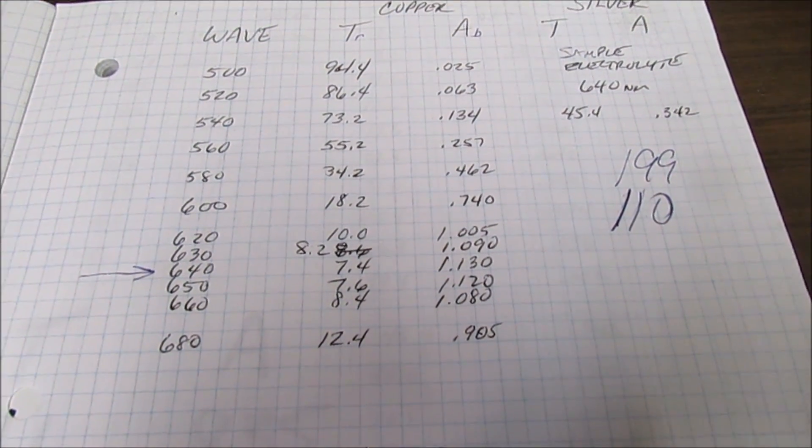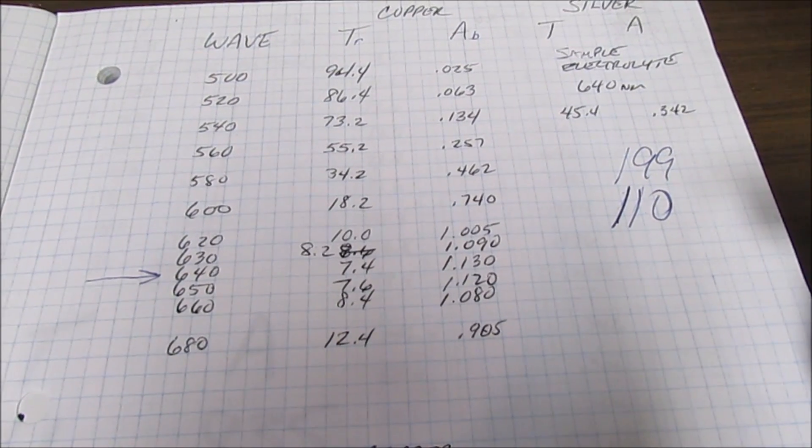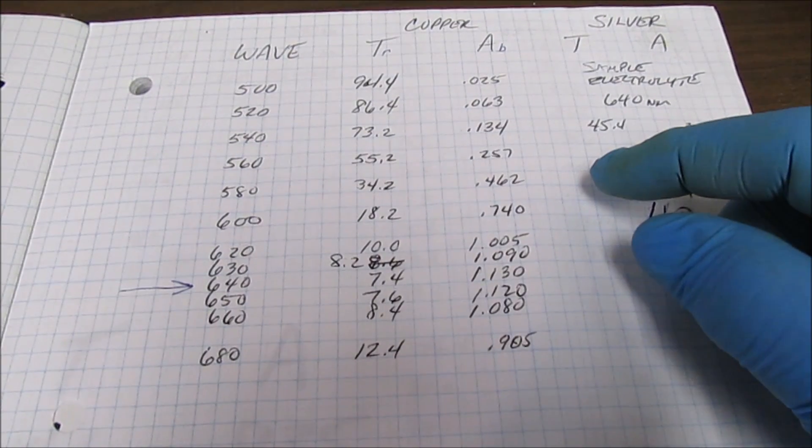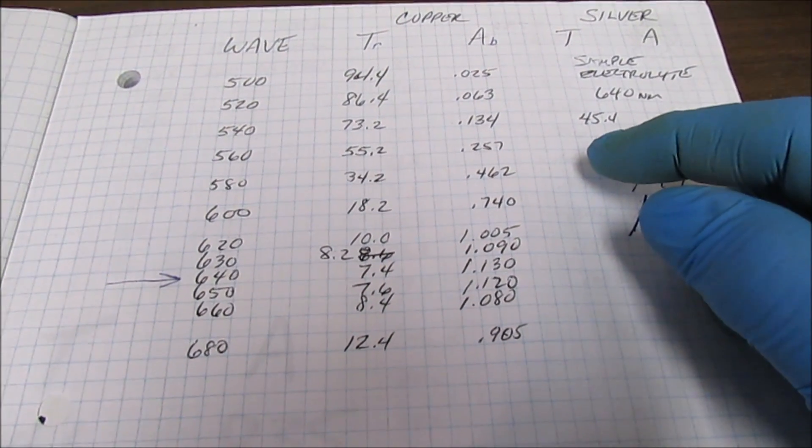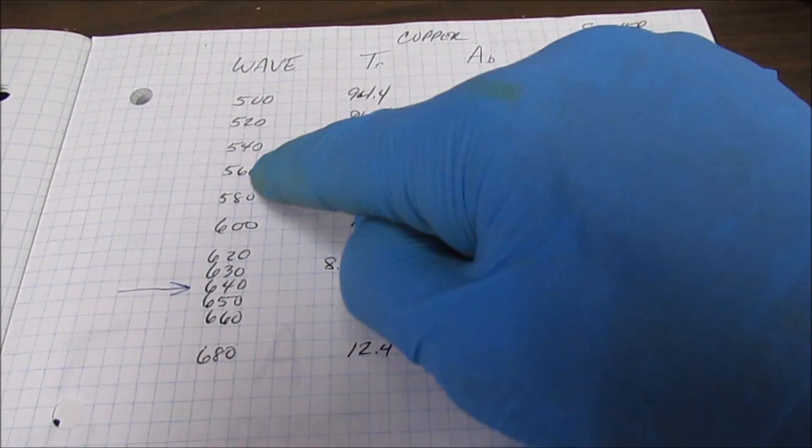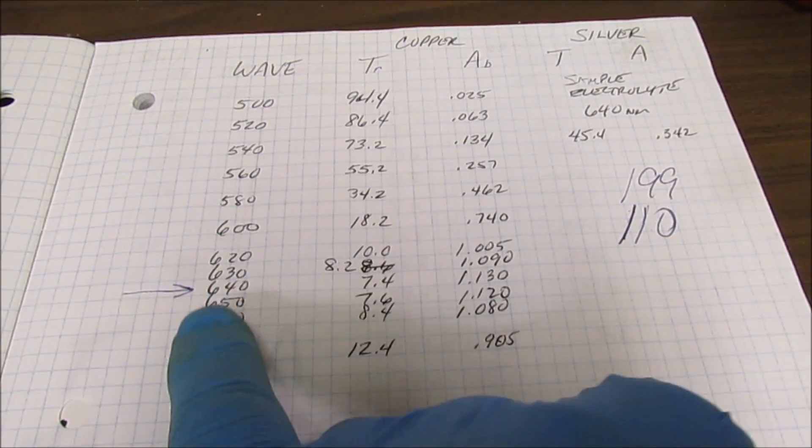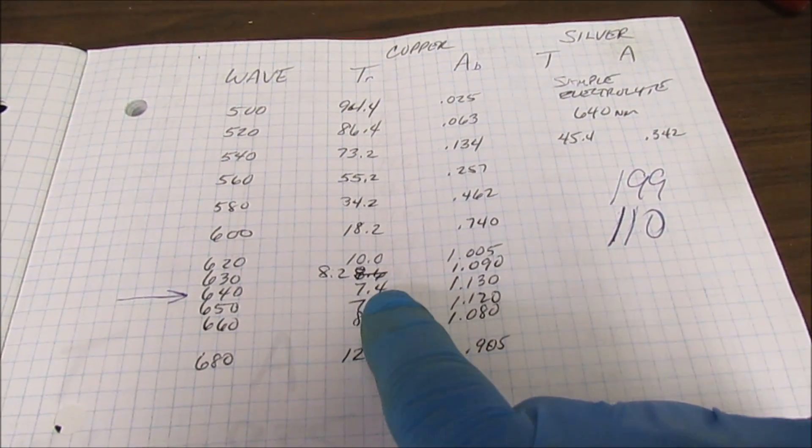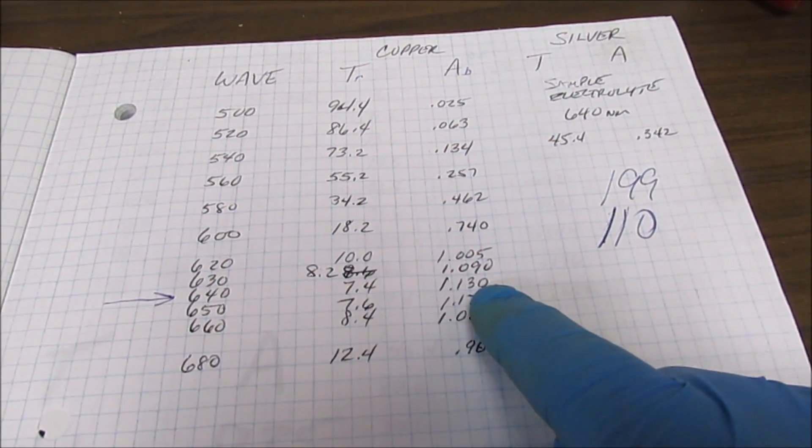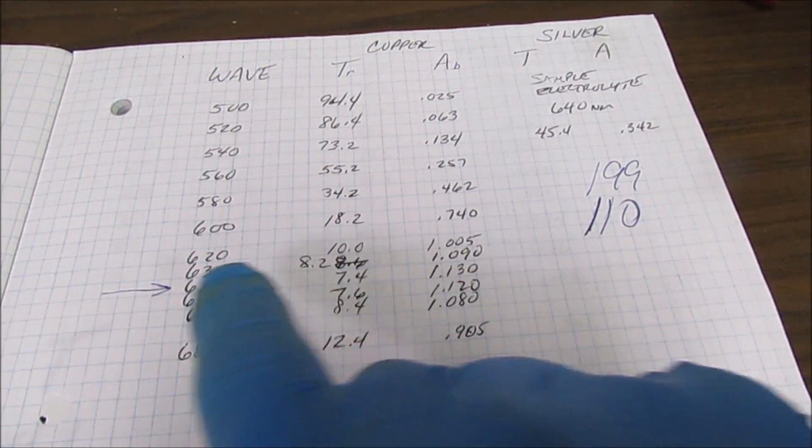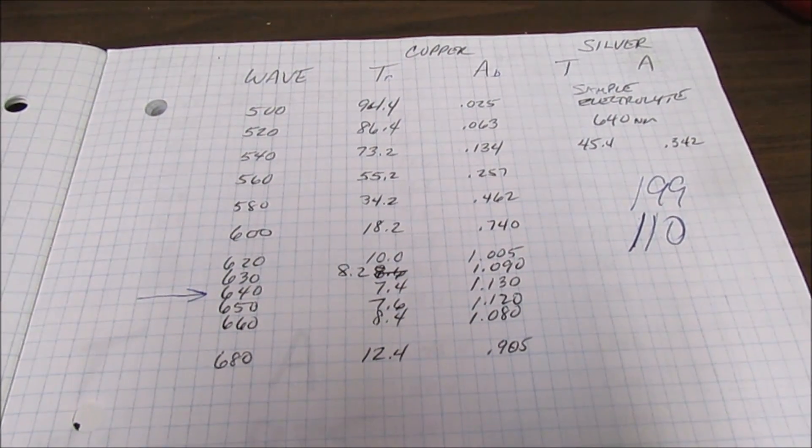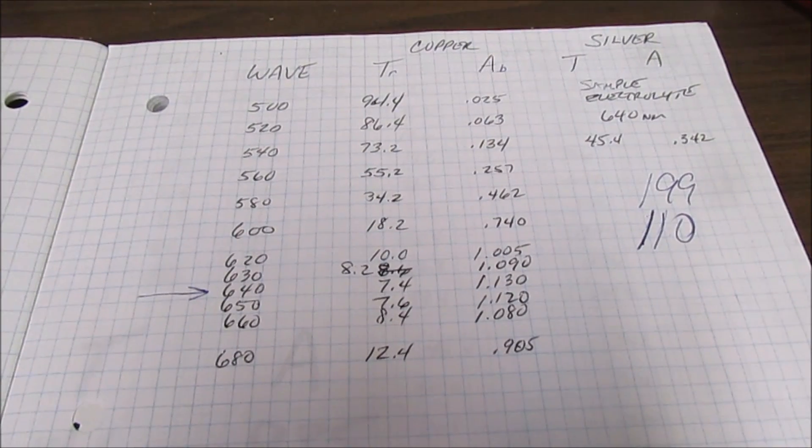Before I start the test, I want to show you how I determined the proper wavelength to use for this test. I made a solution of 60 grams per liter of dissolved copper, put it into the machine, and went through and tested at different wavelengths. I found that at 640, it produced the least amount of transmittance and the greatest amount of absorption of light. So that is the wavelength setting I'll use to perform this test.